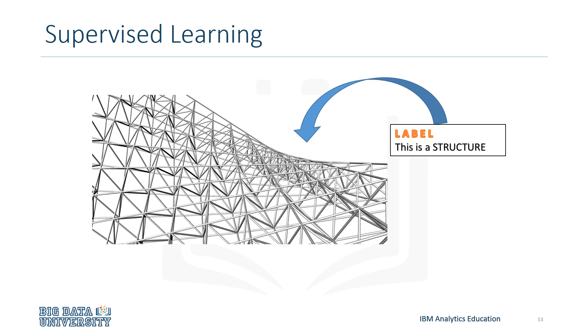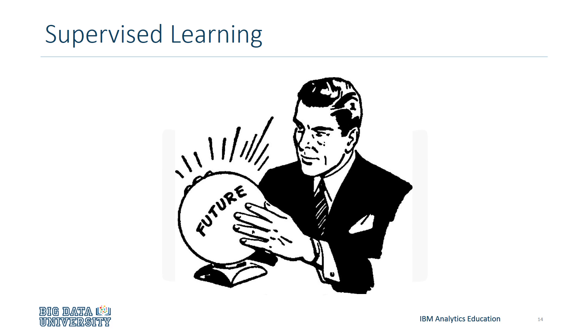In supervised learning, we have a set of training data, or labeled data, in which we know the structure and the outcome of it. We take this data and train a machine learning model so it can understand patterns in the data. Once the model has been trained, we can use it to predict the results of out-of-sample data, or data in which the results are unknown.